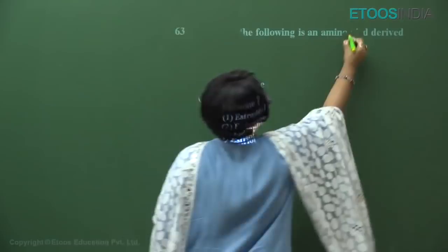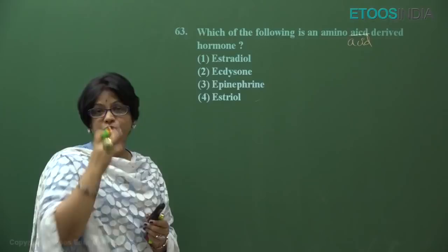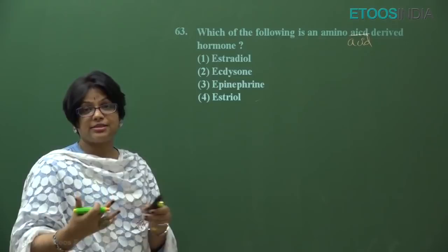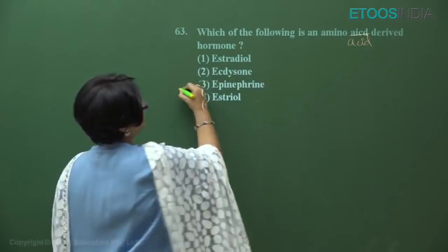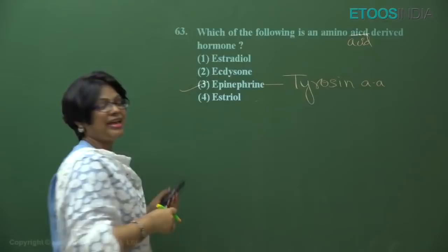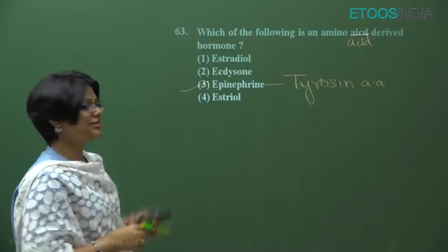Question number 63: which is an amino acid derived hormone? Some hormones are derived from amino acids, some are polypeptides, some from steroids. Estradiol is a steroid — female sex hormone. Estriol is also a steroid-derived estrogen. Epinephrine is a derivative of the amino acid tyrosine. Answer is number three — epinephrine.